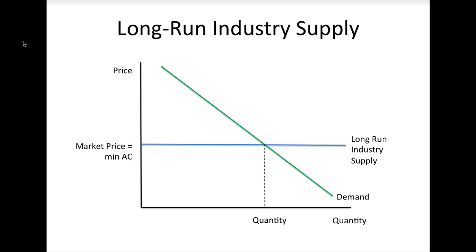In long-run equilibrium, there will be just enough firms in the market to satisfy consumer demand at a price that generates zero economic profits. Now that we have established how to determine both market demand and industry supply curves, you have the tools to begin analyzing the effects of changes in market conditions on market prices and output in both the short run and the long run. We will begin this analysis next lesson.